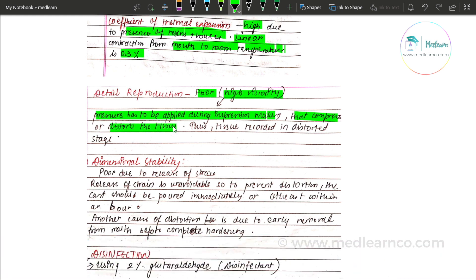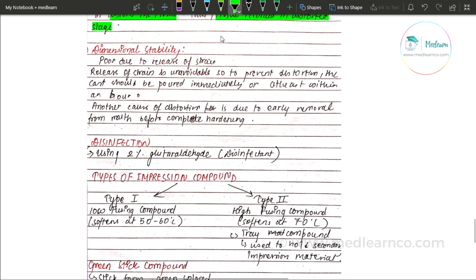Dimensional stability: distortion occurs due to the release of internal strain, which is unavoidable. To prevent distortion, the cast should be poured immediately, or at least within one hour of taking the impression. Another cause of distortion is early removal from the mouth before the compound has completely hardened.